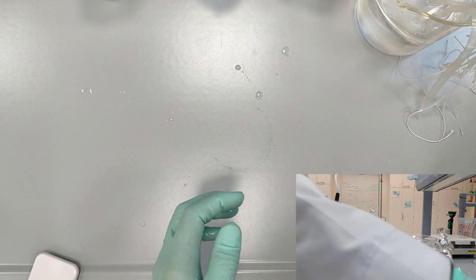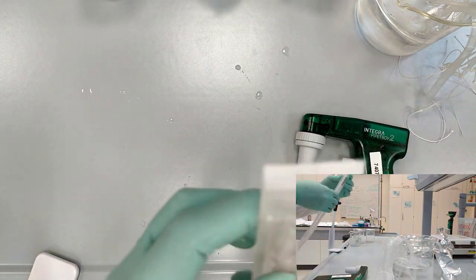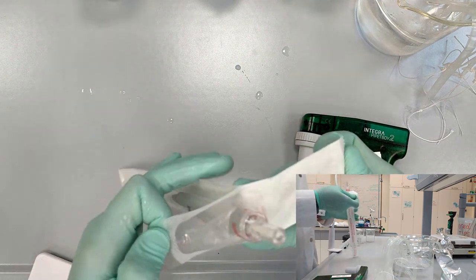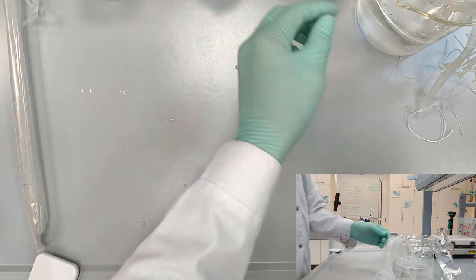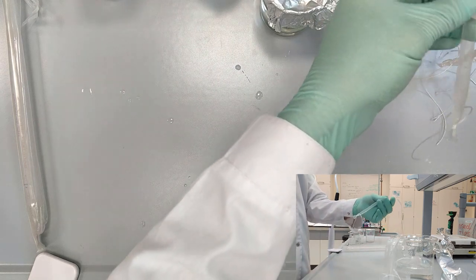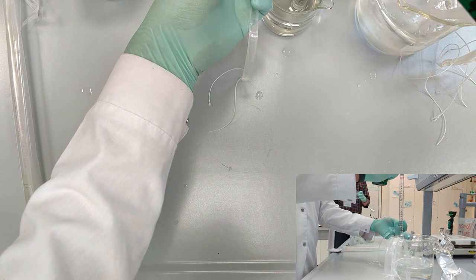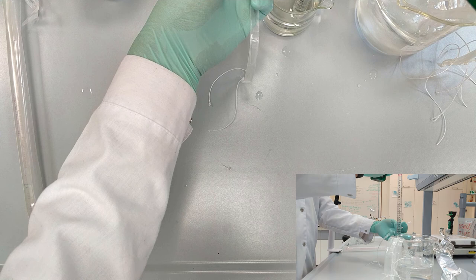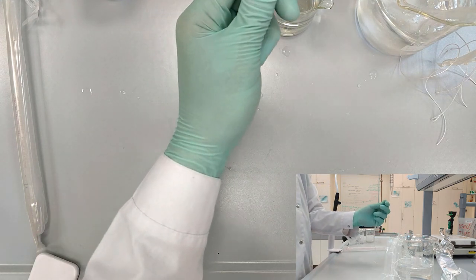So we take the pipette gun, place the pipette and transfer the solution into the dialysis tube. Make sure that you prepared the beakers where you are going to put these dialysis tubes beforehand.